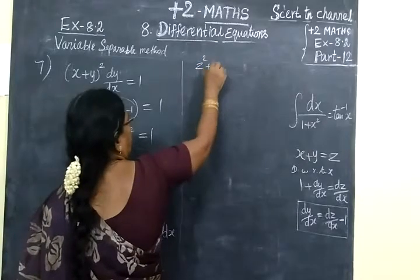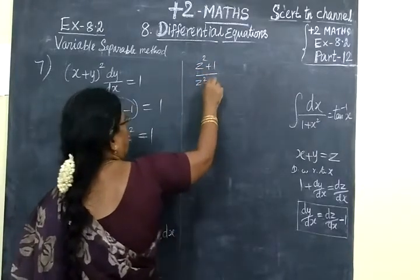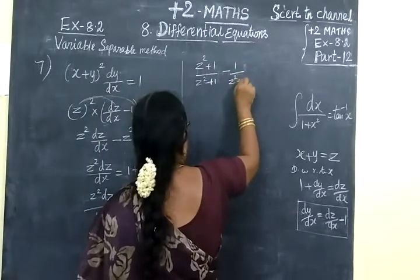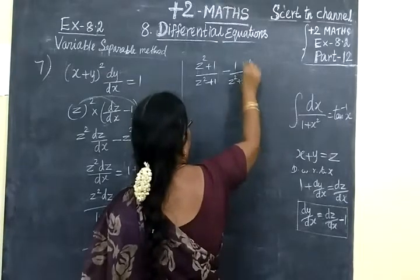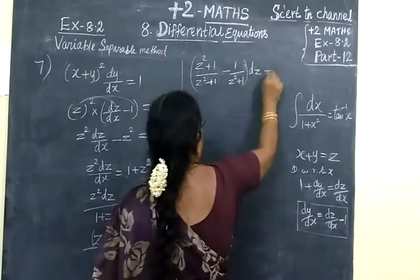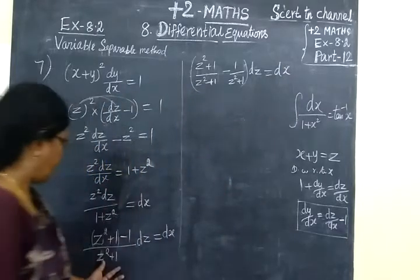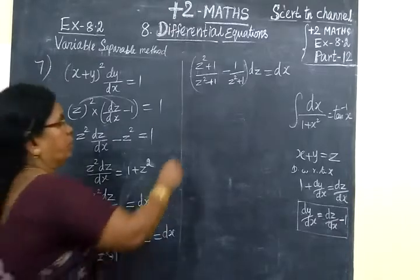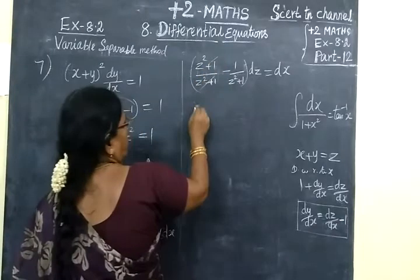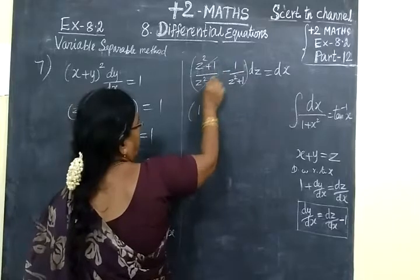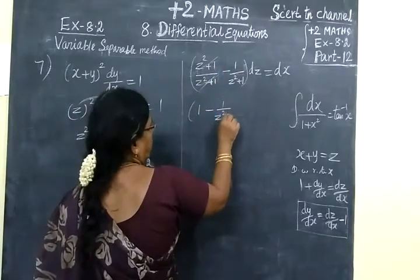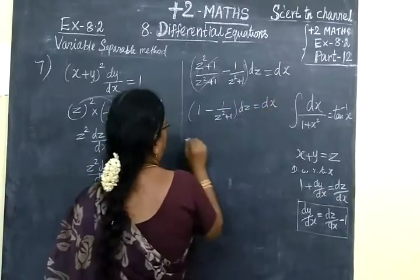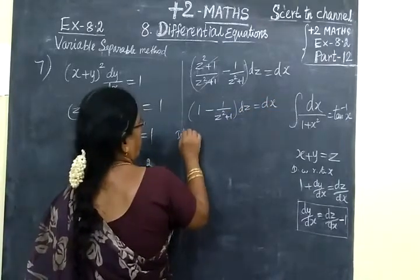So (z²+1)/(z²+1) minus 1/(z²+1) dz = dx. Simplifying z²+1 divided by z²+1, we get 1. So 1 - 1/(z²+1) dz = dx. Now integrating on both sides: